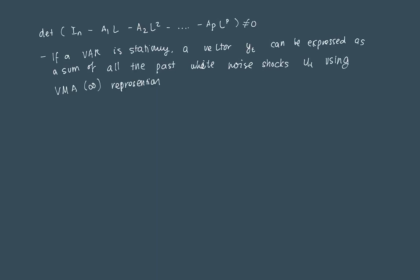So how do we do this? Consider we have the reduced form model below. Yt, for example, is equal to mu, or this is essentially A0, your vector of constants, plus the inverted lag polynomial operator times Ut.